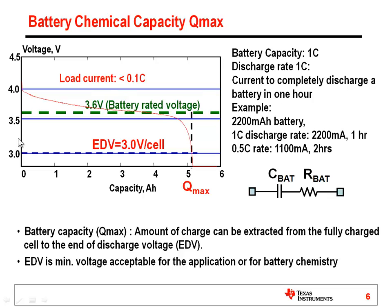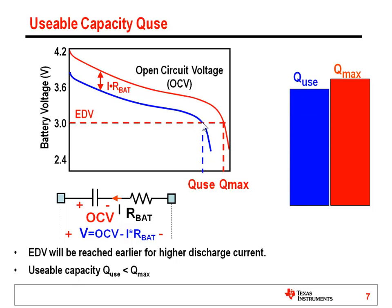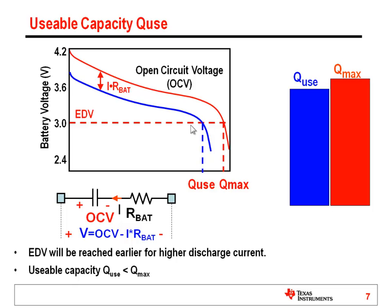You might also hear it referred to as terminate voltage, because that's when you need to terminate your discharge. We talked about Qmax which is how much you could get out of the battery at a very light load theoretically — you're never going to get more than that. But QUs, or usable capacity, is going to depend on your IR drop. Under some particular load current I, using the internal impedance of the battery you're going to have that voltage drop and you're going to hit your EDV at an earlier point. That's what we call QUs or usable capacity. The higher the current, the lower the QUs. Also, the higher the EDV or terminate voltage, the lower your usable capacity.